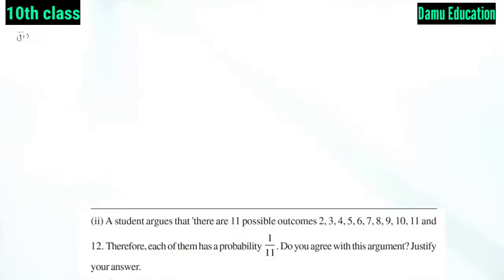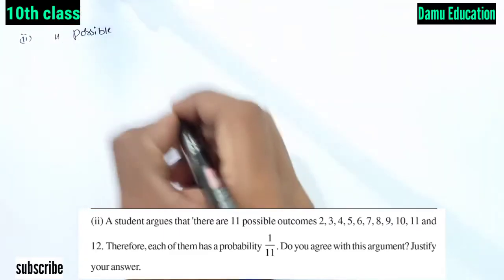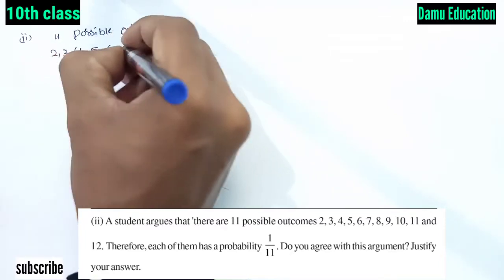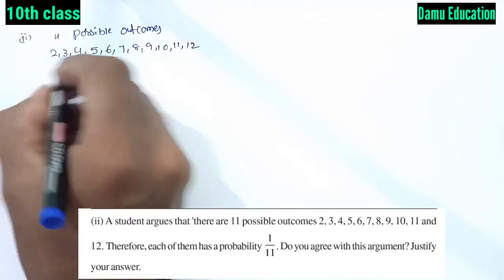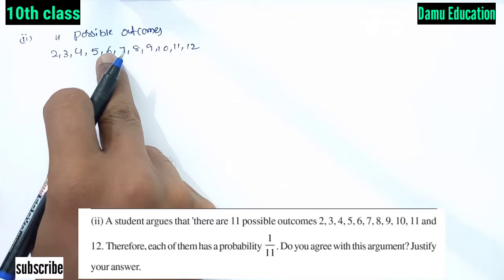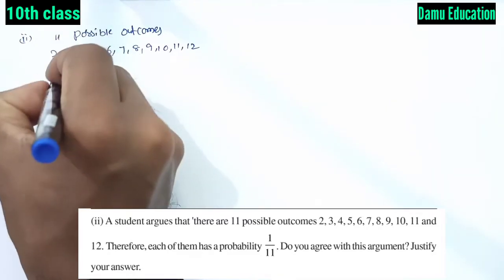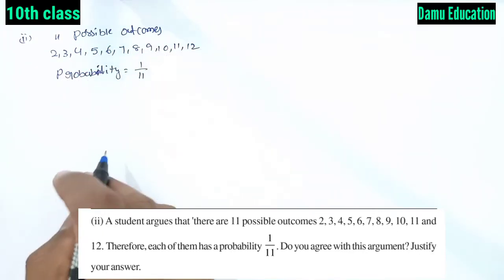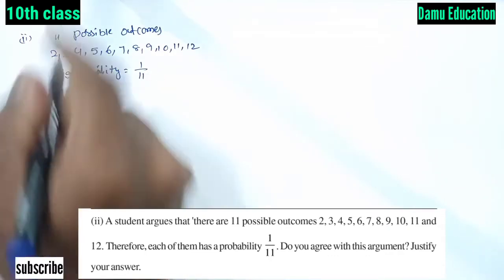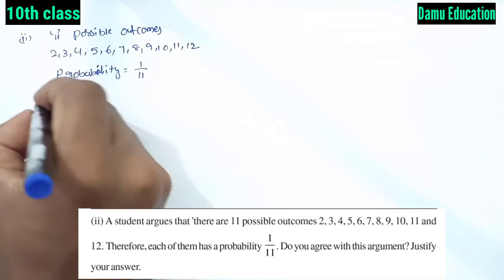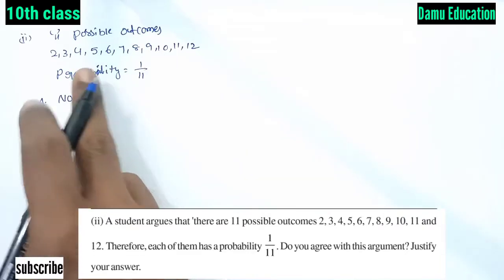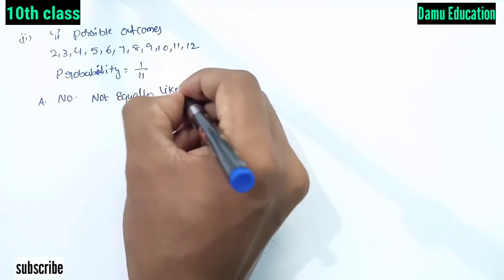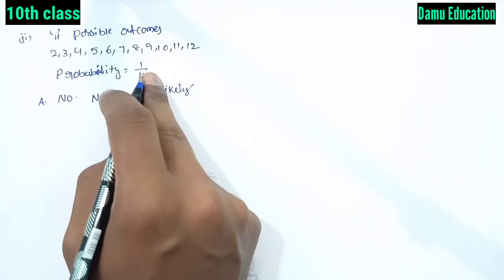For the second part, a student argues that there are 11 possible outcomes — 2, 3, 4, 5, 6, 7, 8, 9, 10, 11, 12 — and therefore each has probability 1/11. Do you agree? The answer is no, because the 11 possible outcomes are not equally likely.